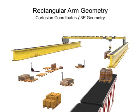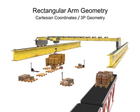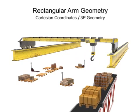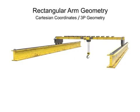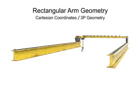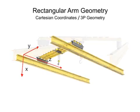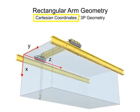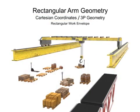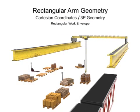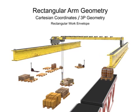Rectangular arm geometry robots can only move linearly in each direction. An overhead crane robot is a good example of this type of motion — it can move forward and backward, left and right, and up and down. Robotic arms that use Cartesian coordinate geometry generate a rectangular work envelope. Rectangular robotic arms have the simplest geometry and control system and are typically used in material handling operations.